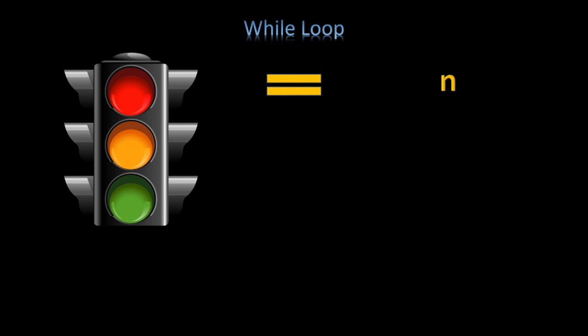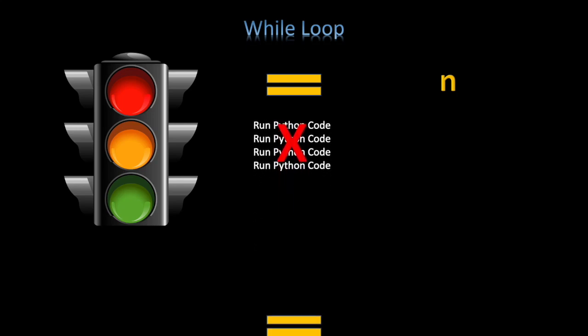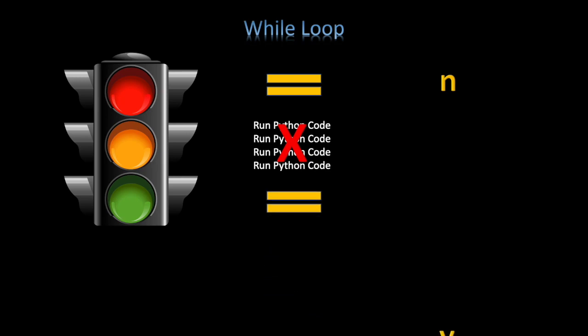Once a traffic light is red, it will be equal to no and then the code will not run. On the other hand, if it is green, it will be yes and the code will run.